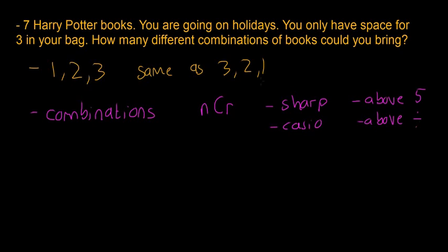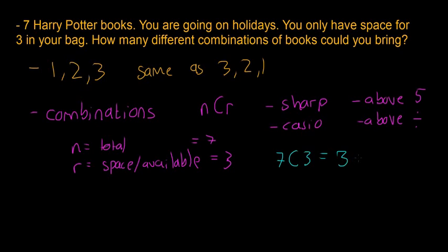To answer this question, we know that n is the total amount and r is the available space. N and r mean the same thing as for permutations, but the operation that the calculator does is a little bit different. We have seven Harry Potter books, so n equals seven and r equals three. So seven choose three equals 35. There are 35 different combinations of books you could bring.